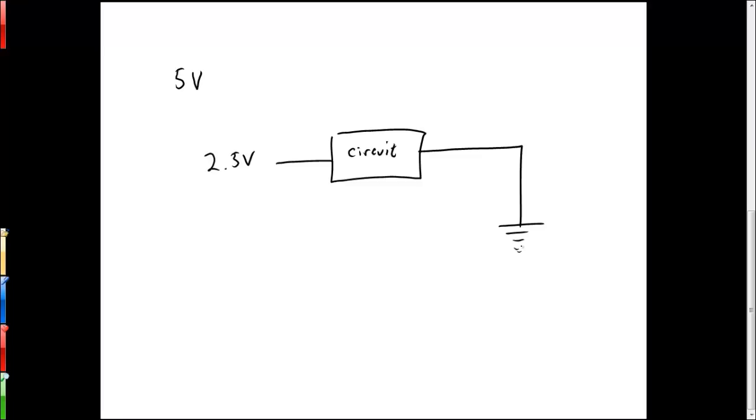Now if we wanted to supply two and a half volts to the circuit, the first thing we might think of is to simply use a voltage divider. That would be, for example, if we had two resistors in series and these resistors were exactly the same size, then the voltage intermediate between these two resistors would be exactly two and a half volts.